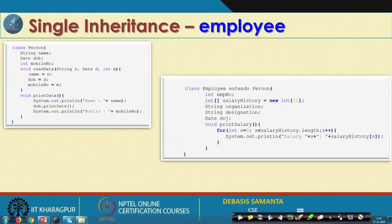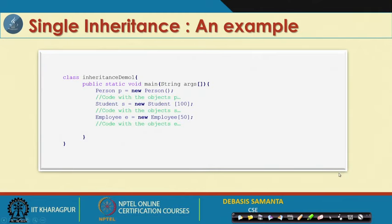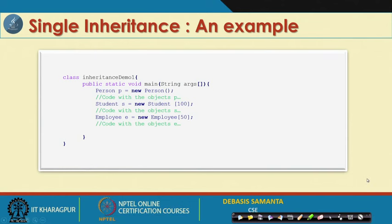Once all the classes are defined, in the main class we can use them and declare objects of each class individually. A regular employee and temporary employee can further extend employee, so that two different classes are inherited from employee, which is itself inherited from person. This extension has no limit — we can go to any level.